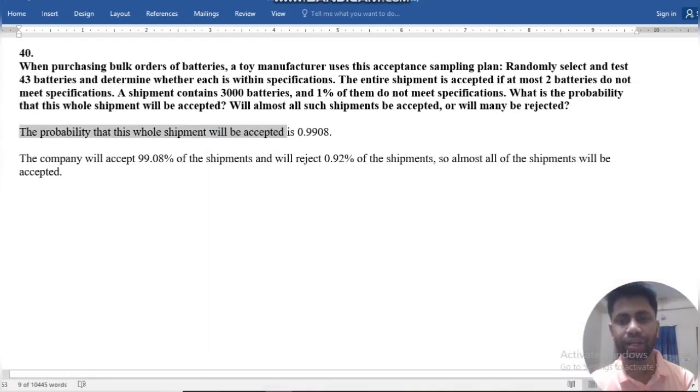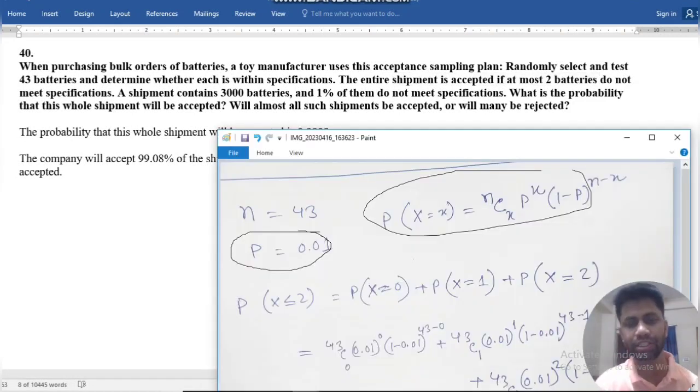So, the entire shipment will be accepted if at most do not meet specification. At most do not meet specification. That means it should be less than 2. So, 0, 1, and 2.